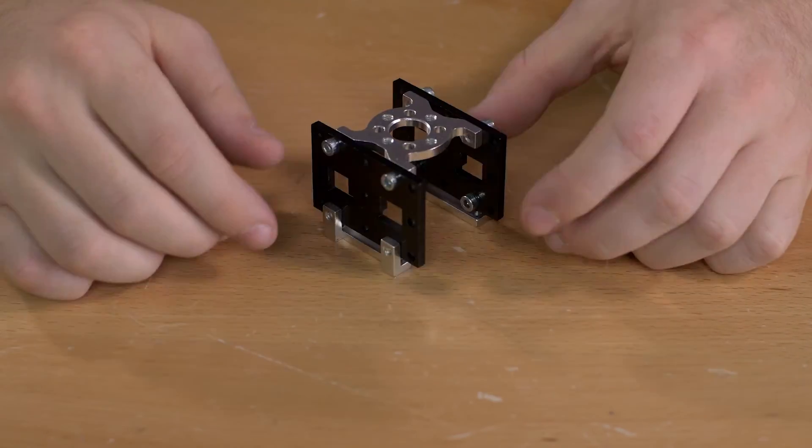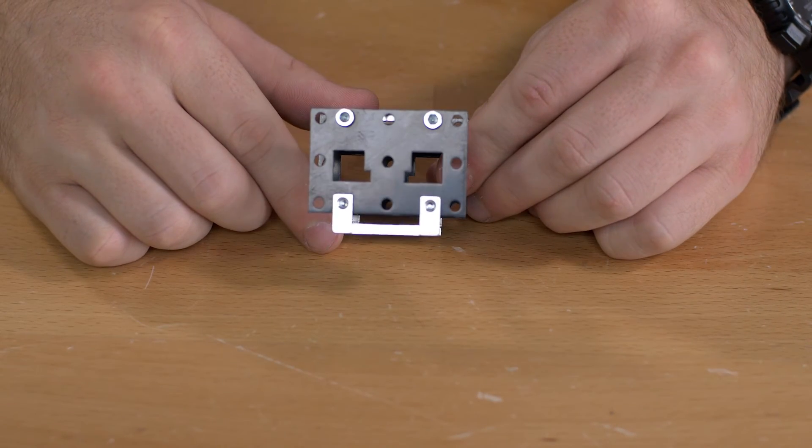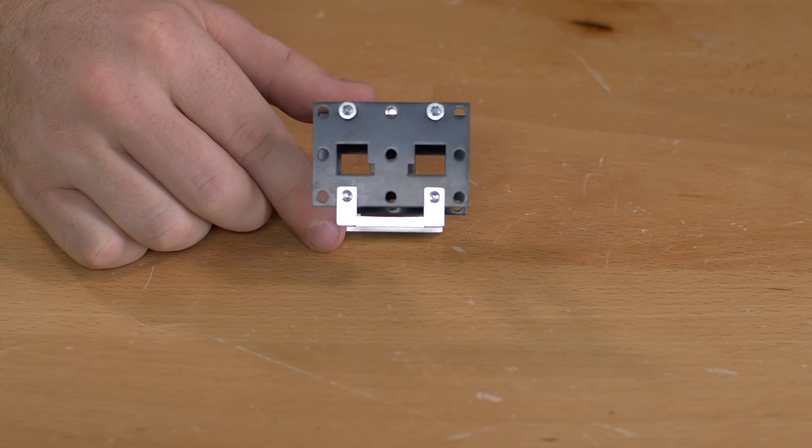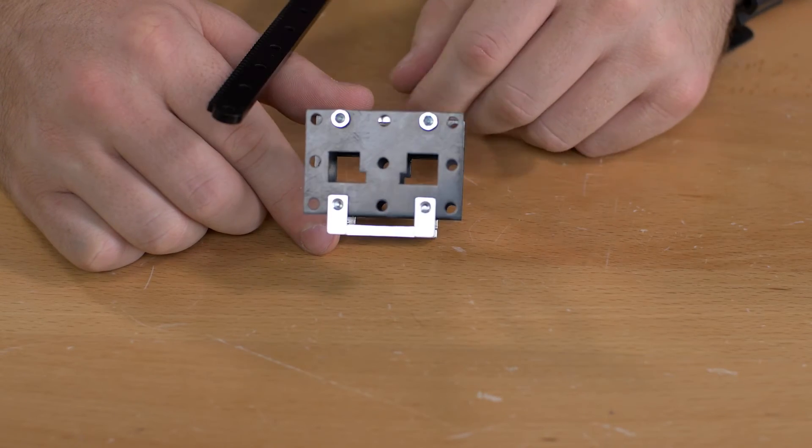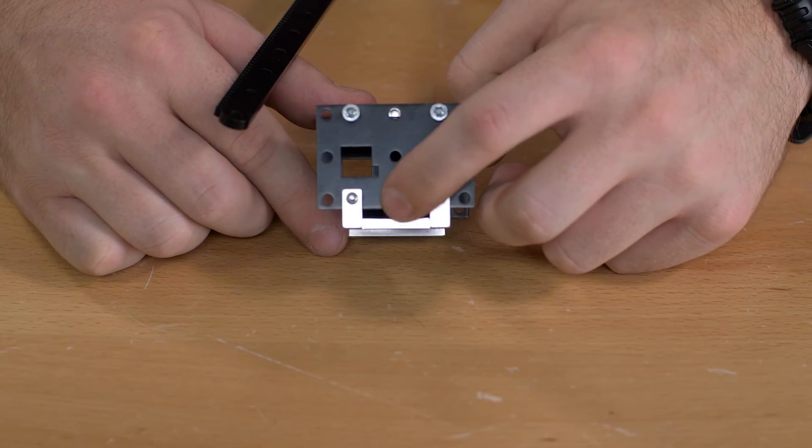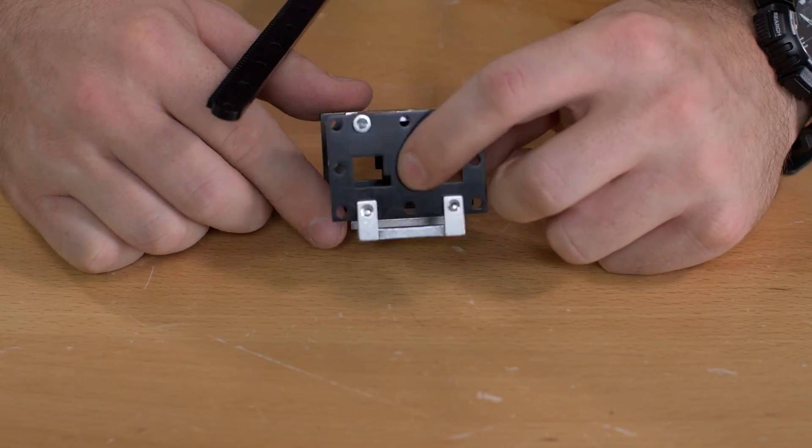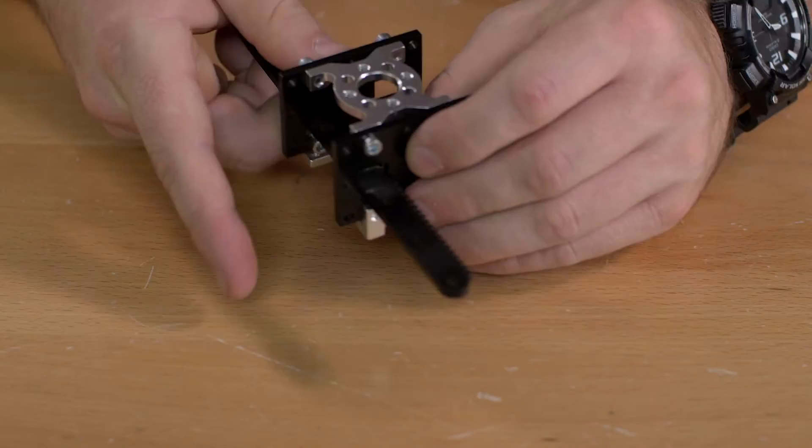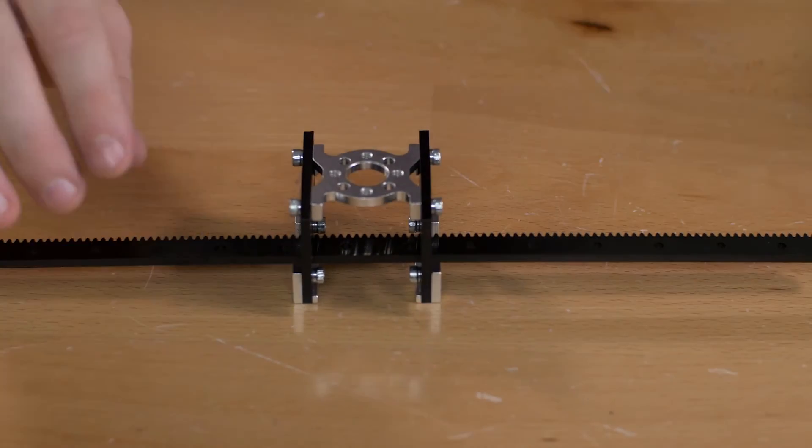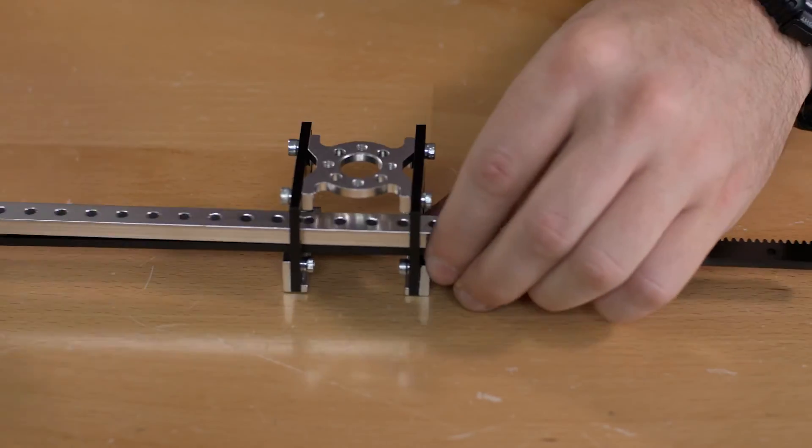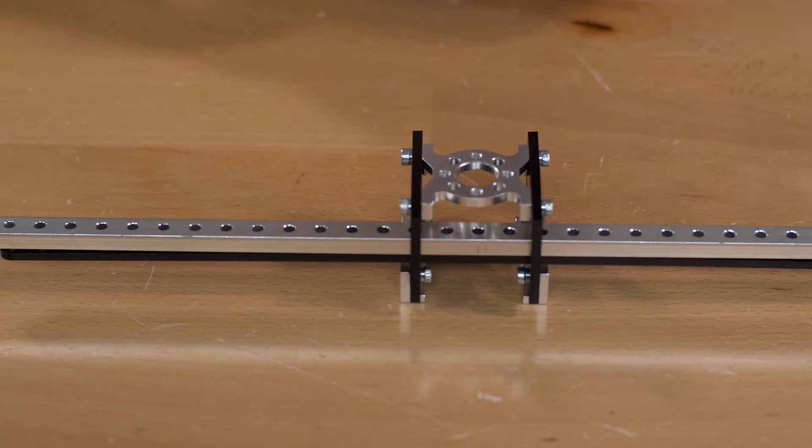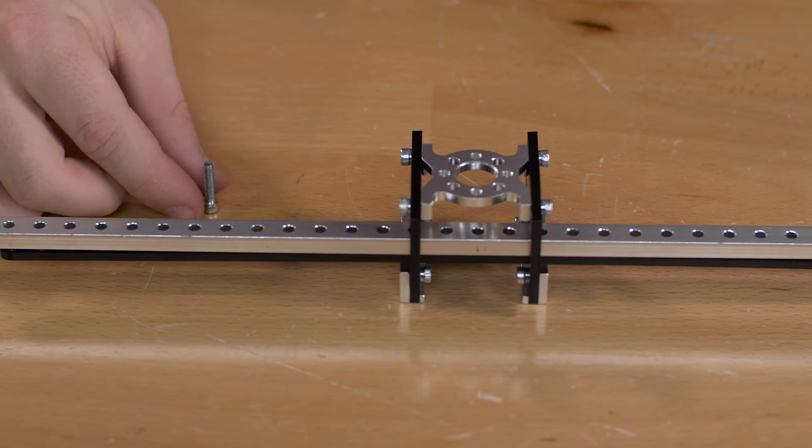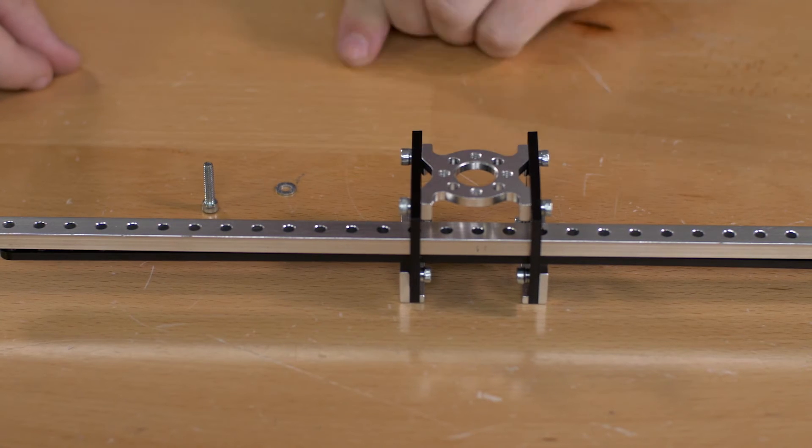Once you have that together inside of the holes you have you're going to slide in your plastic beam gear rack. You're going to do that so that the teeth on the gear rack are in this little indention that the hole has. On top of that you're going to slide in your aluminum beam. To connect that you're going to use a five-eighths inch socket head screw and a number six washer.